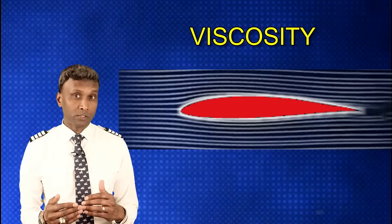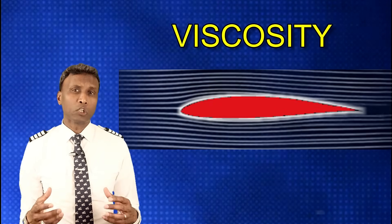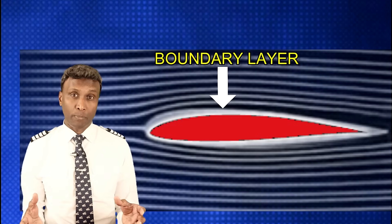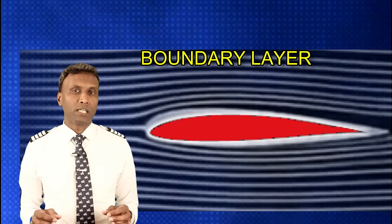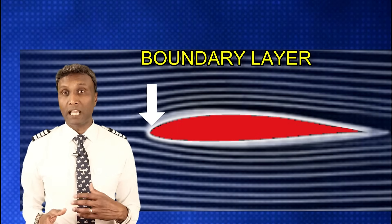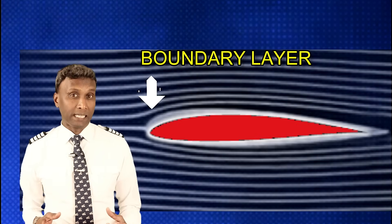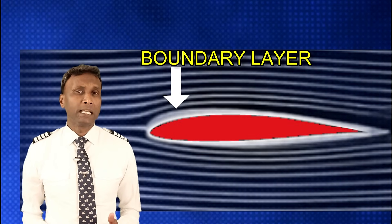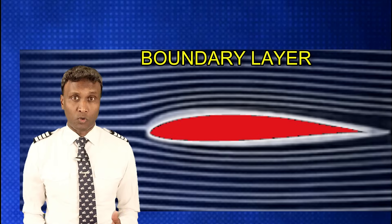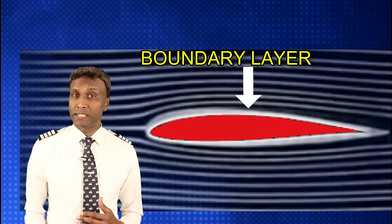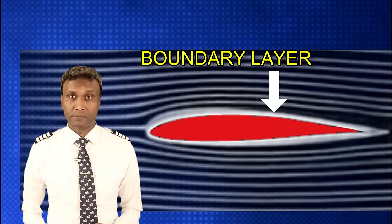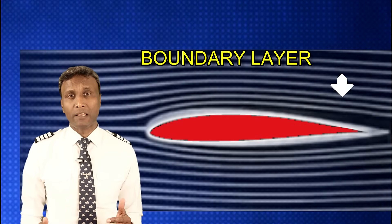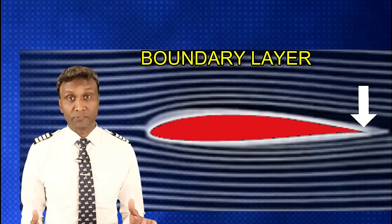Viscosity — the resistance of air to shear — contributes to the formation of the boundary layer and the adherence of air particles to the aerofoil surface. The journey begins at the leading edge, where the aerofoil's curvature guides the air particles. The boundary layer, influenced by viscosity, ensures a smooth and attached airflow along the surface, creating a cohesive stream of air particles. This property helps delay flow separation, ensuring that air remains attached for optimal lift generation.